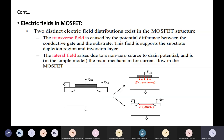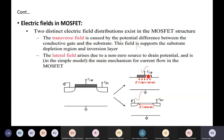Here another important concept is given: electric field in MOSFET. Two distinct electric field distributions exist in the MOSFET structure — one is transverse and another is lateral. The transverse field is caused by the potential difference between the conductive gate and substrate, and this field supports the substrate depletion region and inversion region. The lateral field arises due to the non-zero source-to-drain potential and is the main mechanism for current flow.